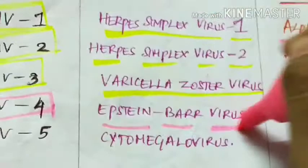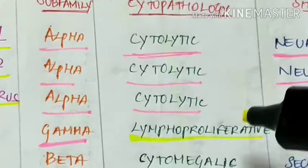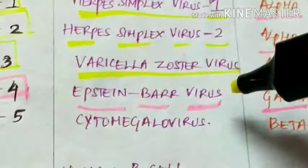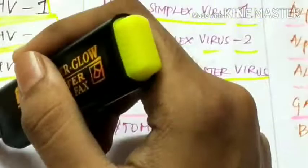Human herpes virus 4, also called Epstein-Barr virus, belongs to subfamily gamma. Its cytopathology is lymphoproliferative — it undergoes replication in lymphoid tissues — and the site of latent infection is lymphoid tissues.